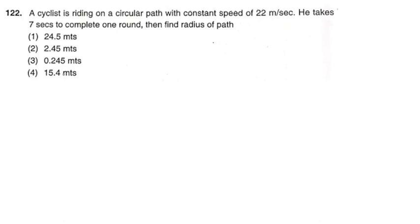Next question: A cyclist is riding on a circular path with a constant speed of 22 metres per second. He takes 7 seconds to complete one round. Find the radius of the path.